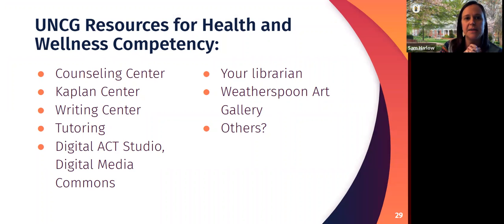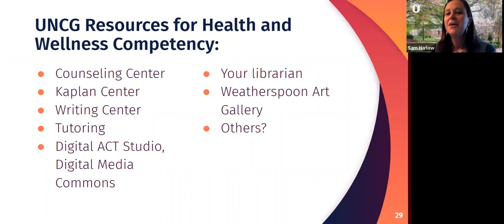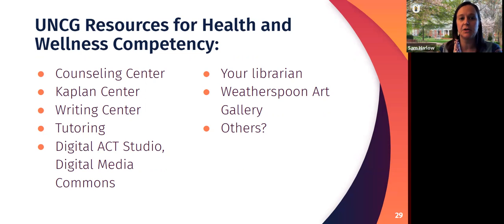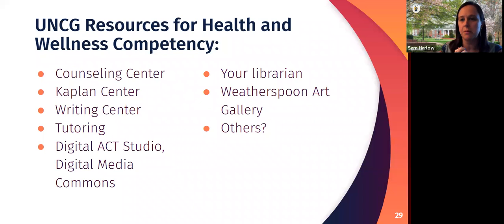Information literacy is something the library helps a lot with, but something coming up a lot with MAC is how important it is to think about it co-curricularly — thinking about all the other units across campus that can help with these courses. Some that do great work around health and wellness include the counseling center, the Kaplan center, and even the Weatherspoon Art Gallery, which does great work with visual literacy and looking at health resources. Many campus units are excited to help think through how they could contribute materials.